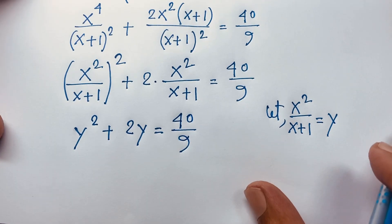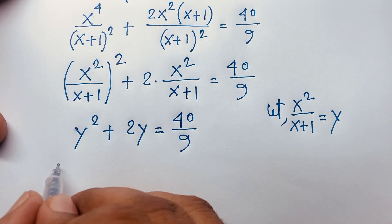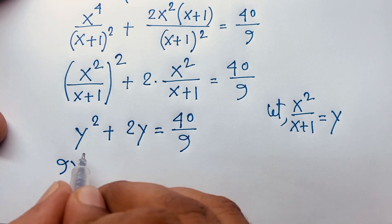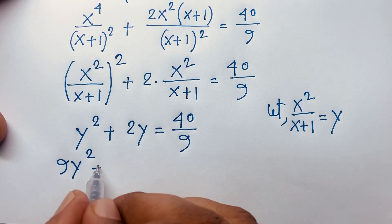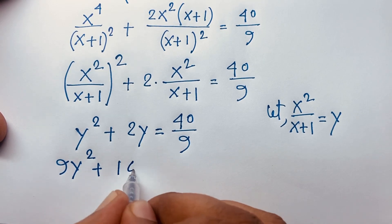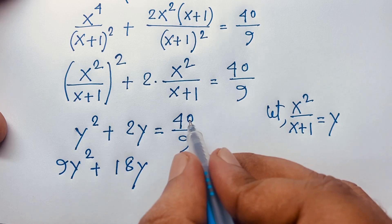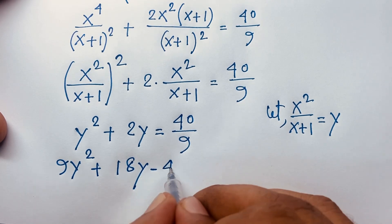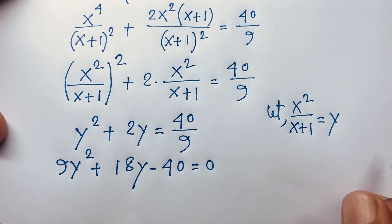If I multiply both sides by 9, we find a nice quadratic equation: 9y² + 18y, and moving 40 to this side, it will be 9y² + 18y − 40 = 0.